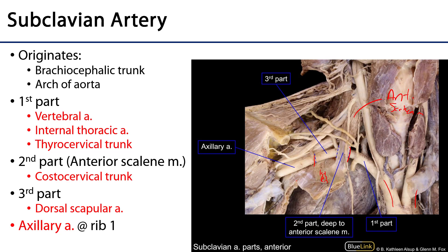The branches of the subclavian artery provide blood to a variety of important areas. With respect to the first part of the subclavian artery, we have the vertebral artery that ascends through the transverse foramina of cervical vertebrae six through one and then enters the cranium through the foramen magnum. The vertebral artery supplies the brain and the cranial meninges with blood, as well as the spine through the spinal arteries and the spinal meninges.